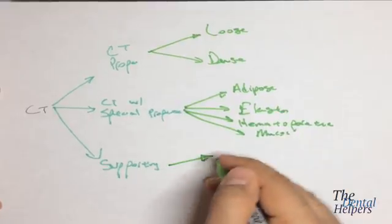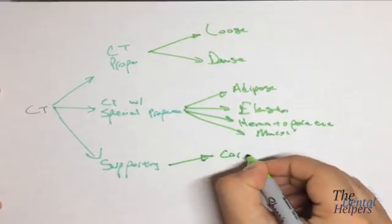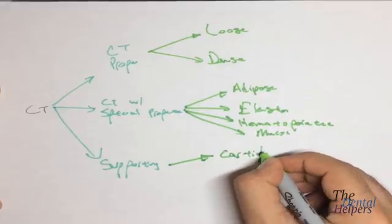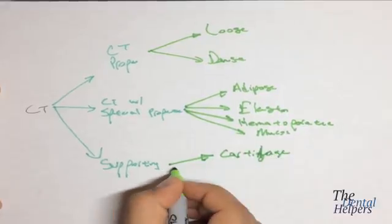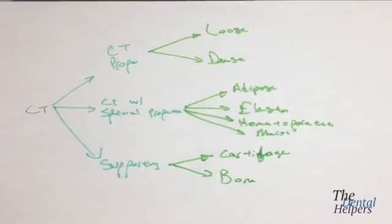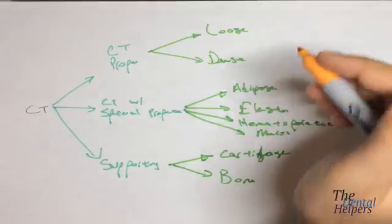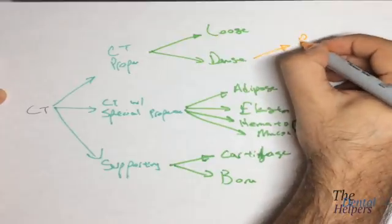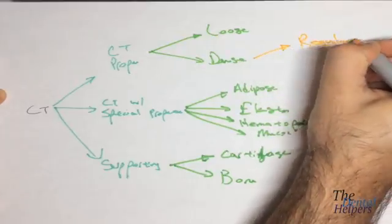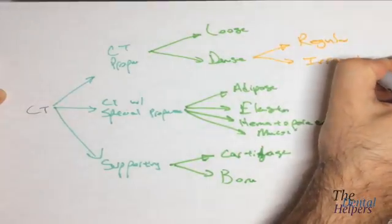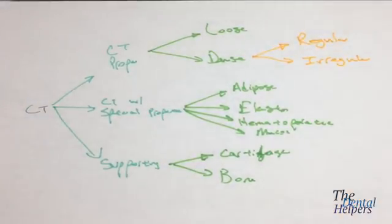Under the supporting, probably thought of it, it is our cartilage and our bone. And then lastly, what we have under the connective proper, the dense tissue, we're going to have regular and also the irregular.